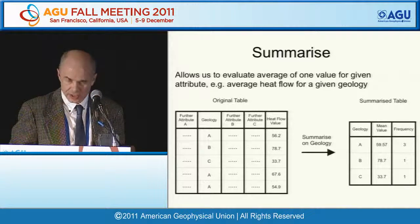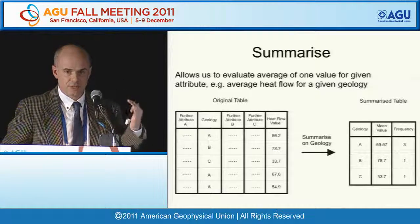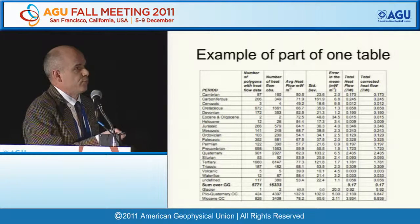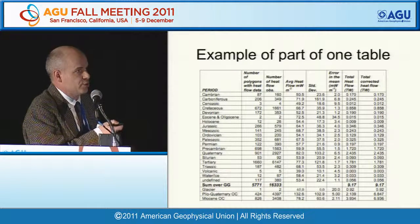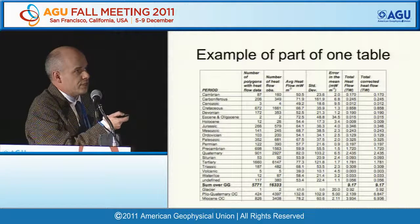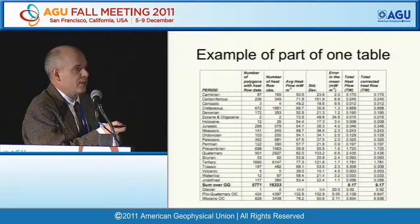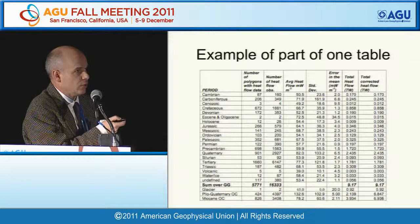We restrict ourselves to geology classes that have at least 50 polygons. This produces a table with geology classes, average heat flow, and the calculated area for each geology class.